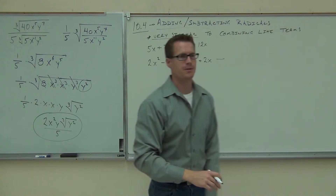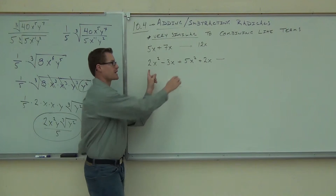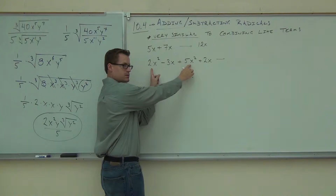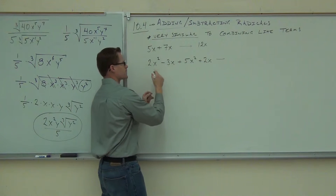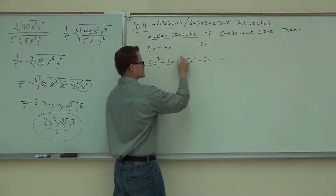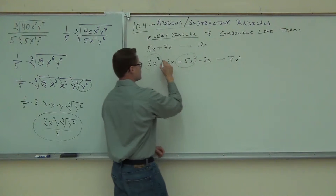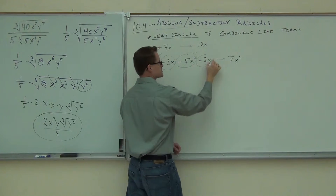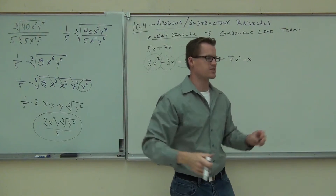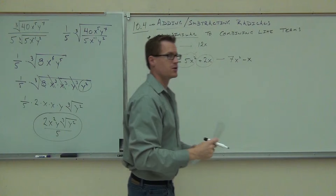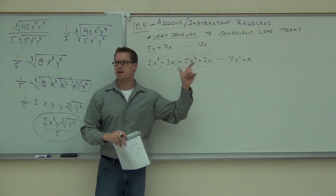How about that one? Do I have any like terms to combine there? Are these like terms? Can I combine those? No. But I can combine these. What's the difference? They both have x's. So not only are we talking about the same variable, we're talking about the same variable with the same exponent. Here we combine these ones, and it's seven x's. That's combined like terms — we've done this a lot, we know how to do that.